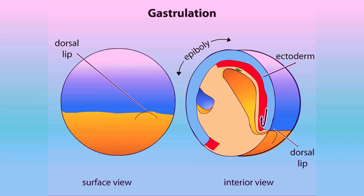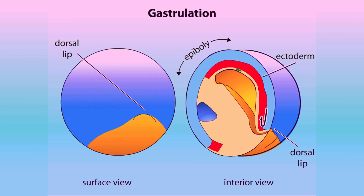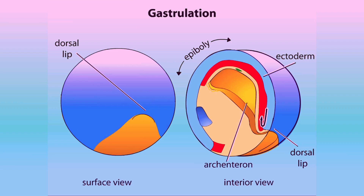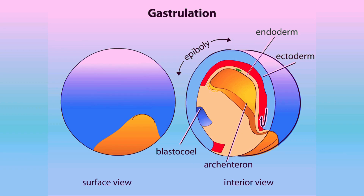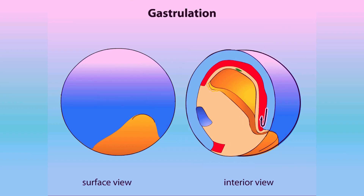As gastrulation proceeds, a cavity called the archenteron forms while the blastocoel shrinks. The archenteron is the primitive gut and is completely surrounded by endodermal tissues. The endoderm at the roof of the cavity originated from the outside of the embryo. The cavity is continuous with the outside via the blastopore, which eventually becomes the anus.